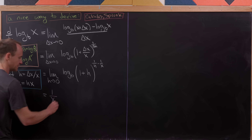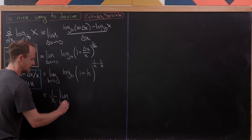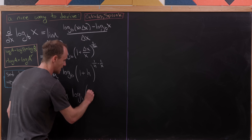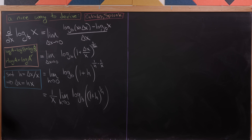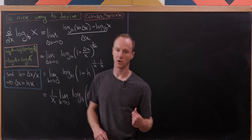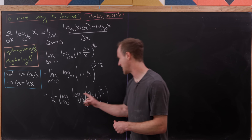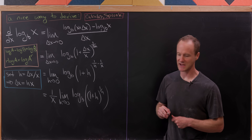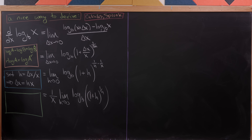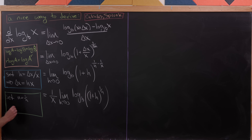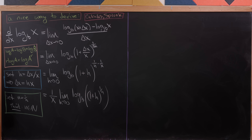We now have (1/x) times the limit as h → 0 of log base b of (1 + h)^(1/h). Next, we do another change of variables and bring the limit inside the logarithm — which is valid because the log is a continuous function. We set n = 1/h and think of n as a natural number, turning this into a limit of a sequence.